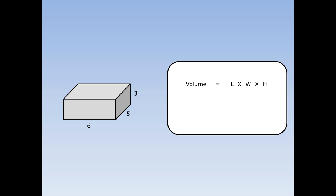To find the volume of this cuboid, first I write out the formula: the volume of a cuboid is length times width times height. Then I fill in the numbers. The length is five, the width is six, and the height is three. Five times six times three is ninety, so the volume of this cuboid is ninety centimetres cubed.